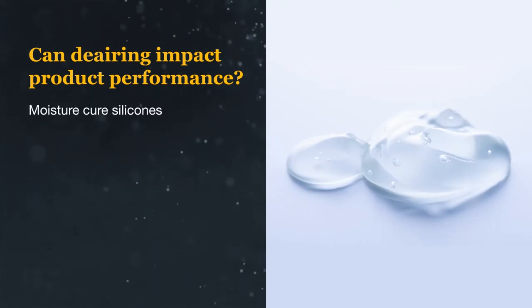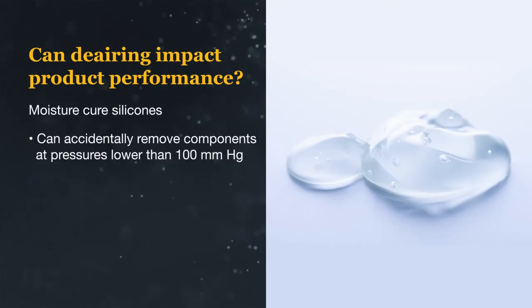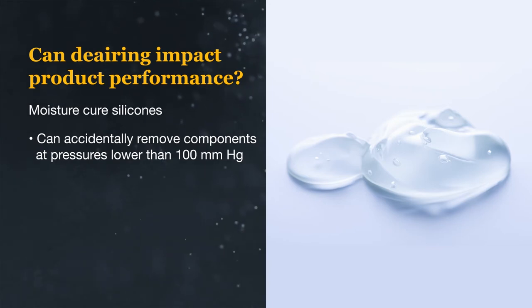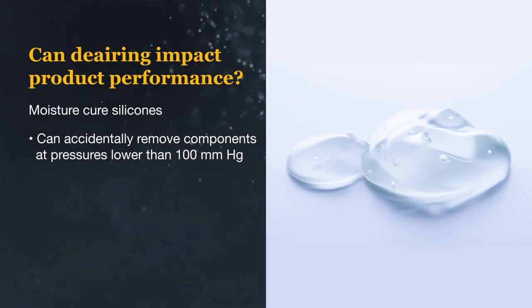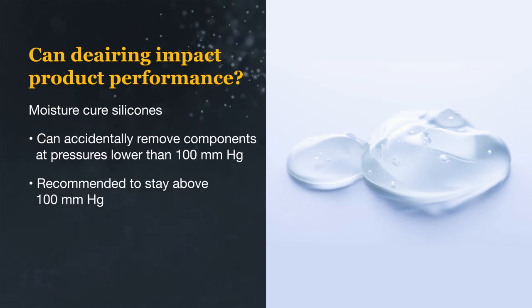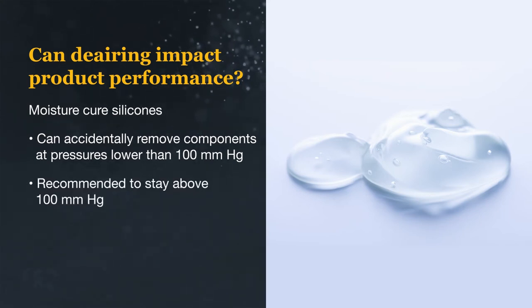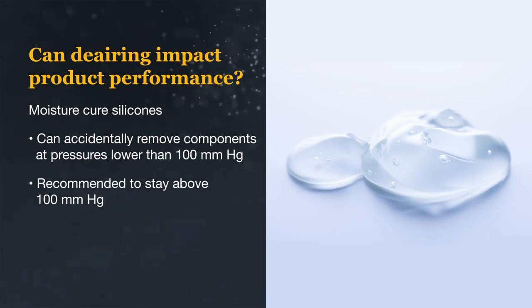Moisture-cure products, however, could have important components removed at low pressures. These products rarely need de-airing, but if de-airing is necessary, a maximum vacuum level of 100 millimeters of mercury should be used.